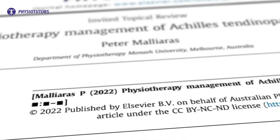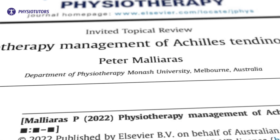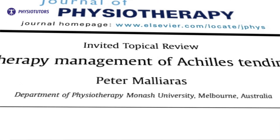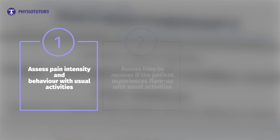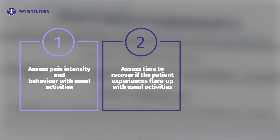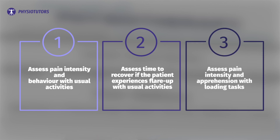According to Malares in 2022, load tolerance assessment involves three components. Number one: assess self-reported pain intensity during Achilles tendon loading activities. Number two: if pain increases after these activities, assess how long it takes to return to pre-loading pain levels. And number three: assess self-reported pain intensity on a pain rating scale during a progressive loading task, usually on the NAS from 0 to 10.